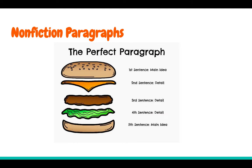The next part of the paragraph — the cheese, meat, and lettuce — those are the details that expand on your main idea. In this part of your paragraph, the author will give you facts and extra information and examples. Finally, the bottom bun represents your conclusion. This is a sentence that summarizes what you want your reader to know, so it restates the main idea.